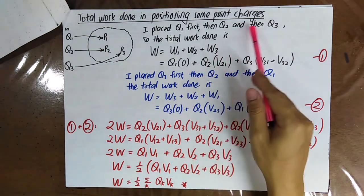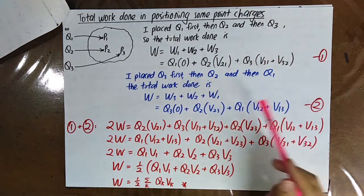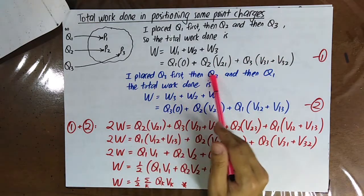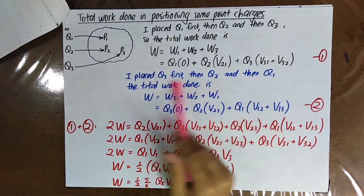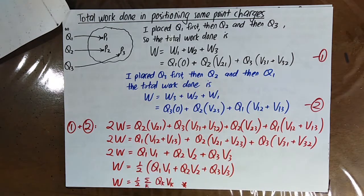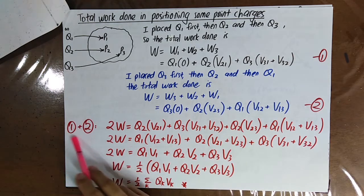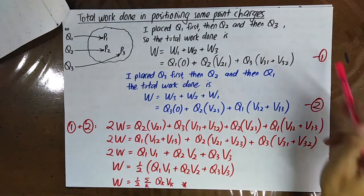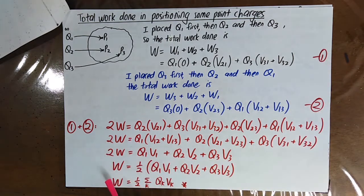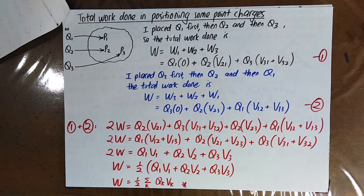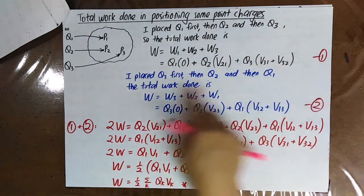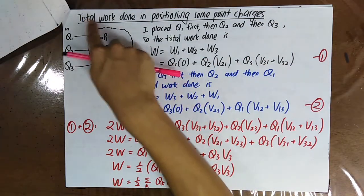If you reverse the sequence — placing q3 first, then q2, then q1 — the total work done can be written from these two equations. You merge them by adding the two equations, and finally you get the work done equal to half of the summation of q times V, where k is the total number of point charges.